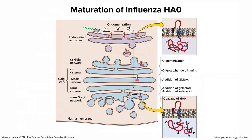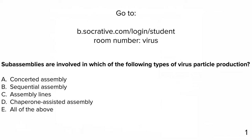Quiz question: sub-assemblies are involved in which of the following types of virus particle production? Concerted assembly, sequential assembly, assembly lines, chaperone-assisted assembly, or all of the above? The answer is E — all of the above. Sub-assemblies can be part of any of these processes. It's a versatile process that allows for correcting mistakes.